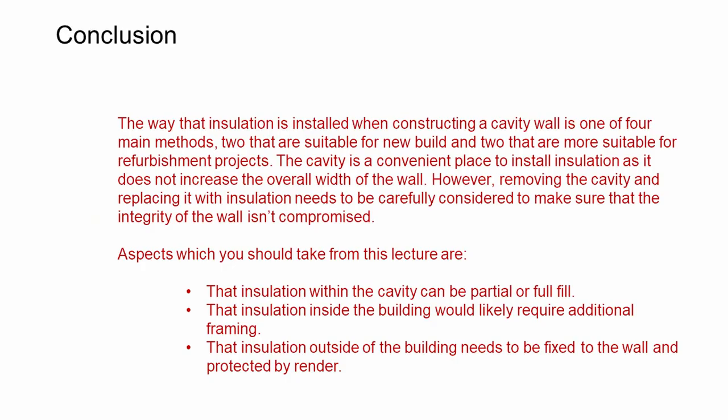In conclusion, the way that insulation can be installed to a cavity wall depends on whether it's a new build or refurbishment project. There are four main methods of placing insulation. The cavity is a convenient place for insulation, but removing the cavity does remove some of the protection against weather that it provides. Key aspects to take from this lecture are that insulation installed between leaves of masonry can be full or partial fill; that if installed internally, insulation would likely require some additional framing; and that external insulation is fixed back to the wall and needs to be protected from impact and weather.